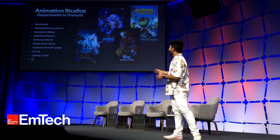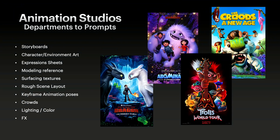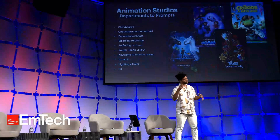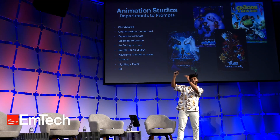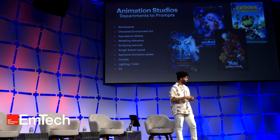For context, before I've been doing this independent stuff, I used to work at DreamWorks. I worked on a lot of these movies as a teacher, teaching our software. What you're seeing over here are all the different types of departments we would have: storyboarding, character and environment artists, things like modeling, expression sheets, surfacing, rough layout. All these different creative departments are usually involved in making an animation studio. What I'm thrilled with — and also nervous about — is that a lot of these departments can now be assisted with some AI workflows.